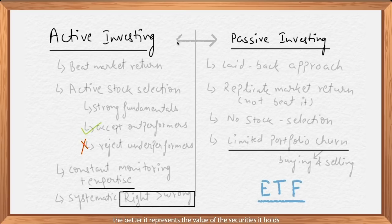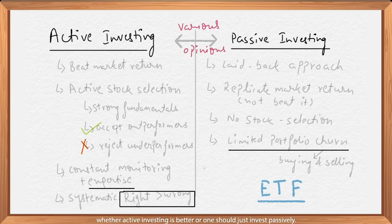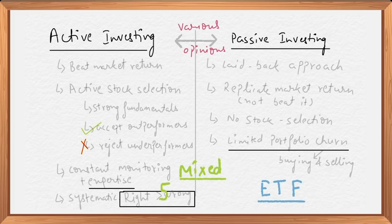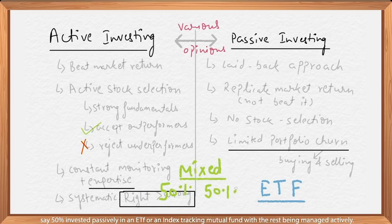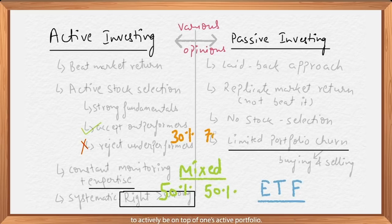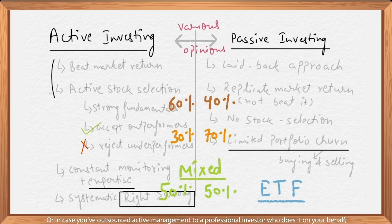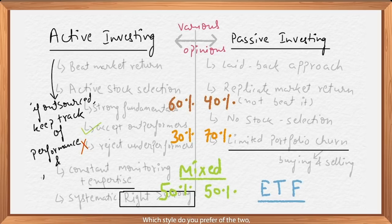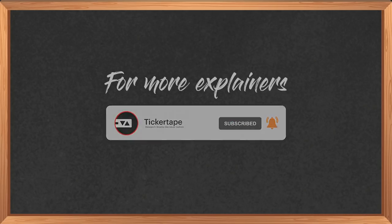Active versus passive is a topic that attracts very heated discussion amongst investors — whether active investing is better or one should just invest passively. Practically, one should follow a combination of the two strategies: say, 50% invested passively in an ETF or an index-tracking mutual fund, with the rest being managed actively. Of course, this depends on the expertise level and the time available to actively stay on top of one's active portfolio — or if you've outsourced active management to a professional investor, one has to also be mindful of the performance of the investment manager and the fee charged. So how about you — which style do you prefer, active or passive investing, and in what percentages? Let us know in the comments below, and for more such simple explanations, subscribe to our channel. Keep it simple.